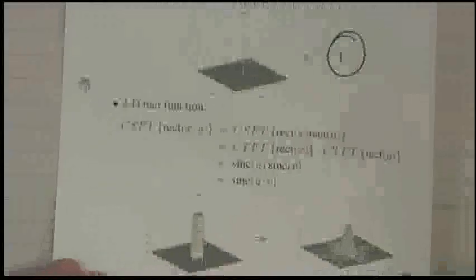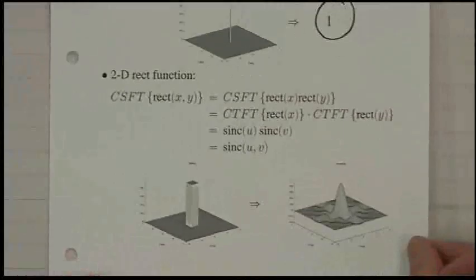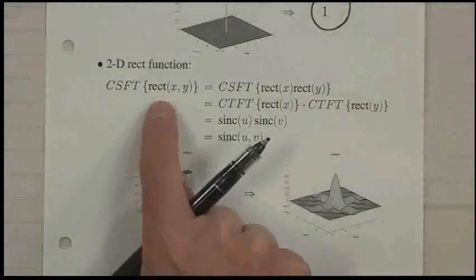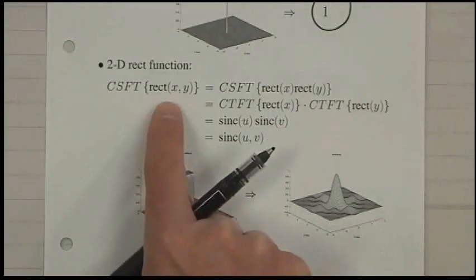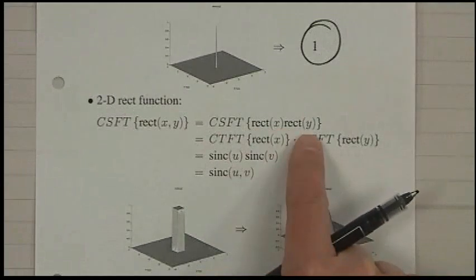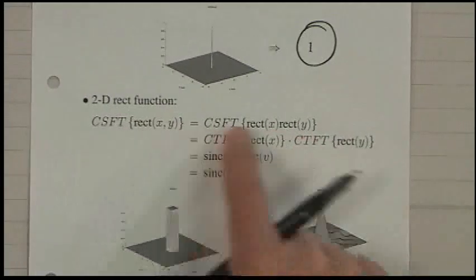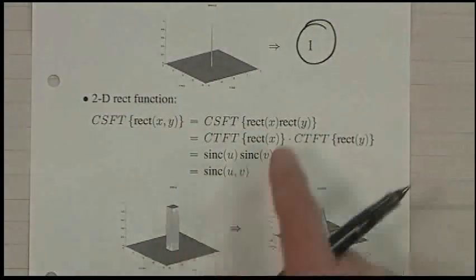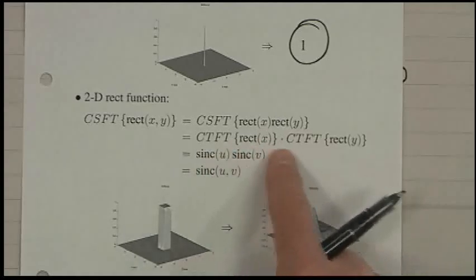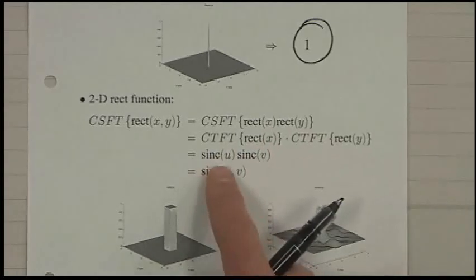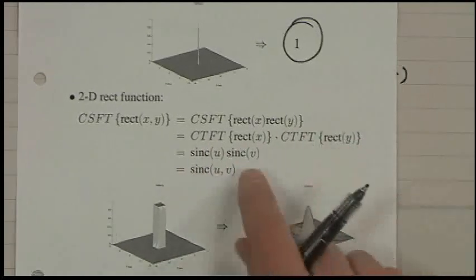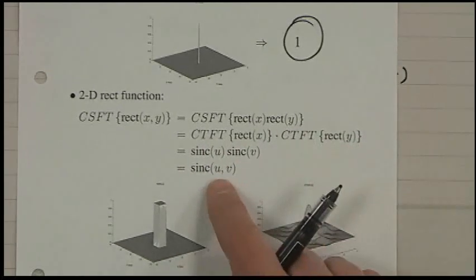If you take the continuous space Fourier transform of a 2D rect — rect of X times rect of Y — the rect XY is a separable function, so you take the continuous time Fourier transform of each individual function and get sinc U times sinc V. By definition that's sinc UV. The sinc function is not rotationally invariant — if you plot the rect function it looks like a square, and its Fourier transform is the sinc, which also varies as you go around circles of constant radius from the origin.